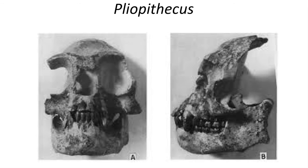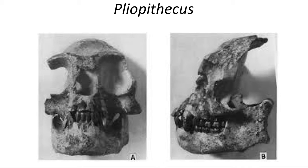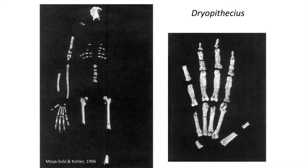During the Miocene, ape-like primates moved out of Africa and expanded their geographic range into Europe and Asia as the climate during the late Miocene became slightly warmer. These European and Asian fossil apes are placed within three families: the gibbon-like Pliopithecus from the Czech Republic, Oreopithecus from Italy, and the Pongidae-like Dryopithecus from southern France and Spain.